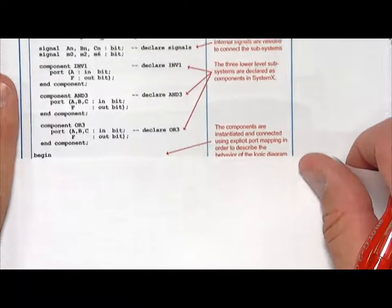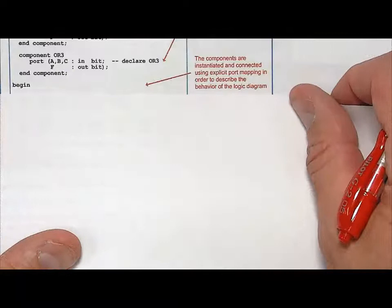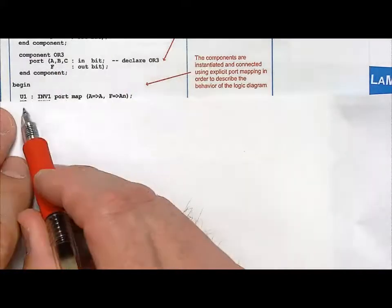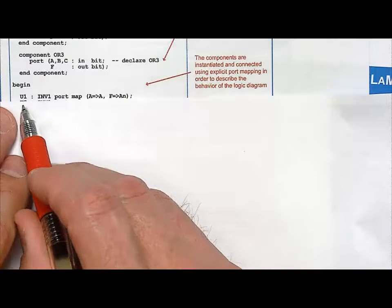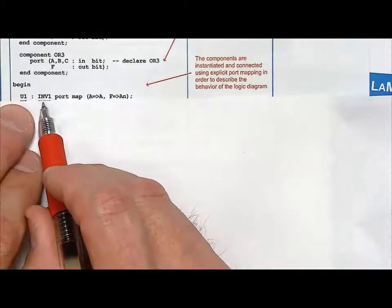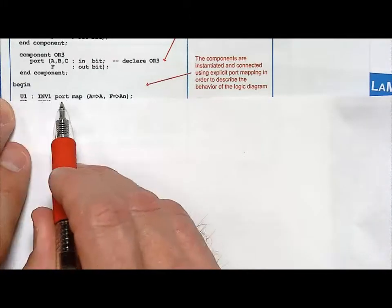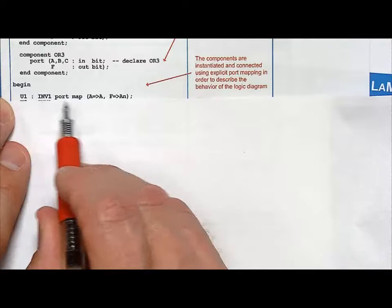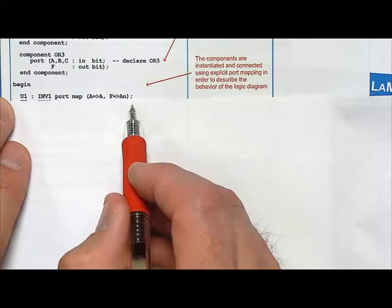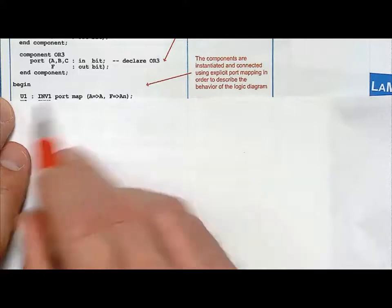So what's left is I need to instantiate these and port map them. So the first thing I'm going to do is I am going to give a unique instance name. And the reason you need an instance name is because we might use this inverter more than once. And in fact, we will use it more than once. We're going to use it three times. I'm going to use the keyword port map. Notice you can put it all in one line, or you can wrap lines. It doesn't matter. It is all understood until it gets to the semicolon. The semicolon ends this line of code.